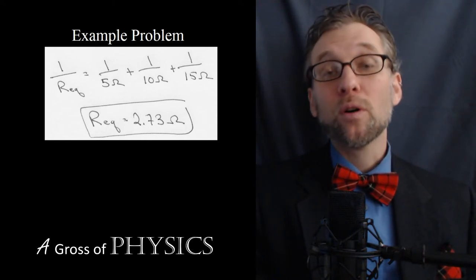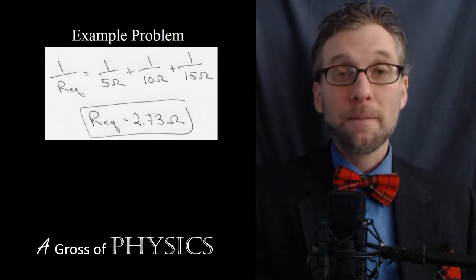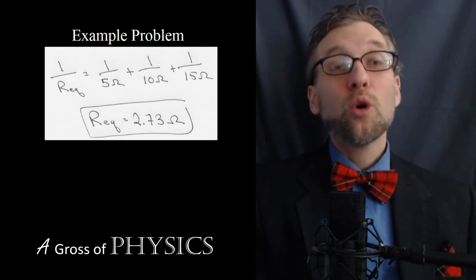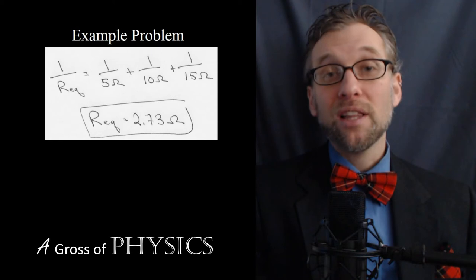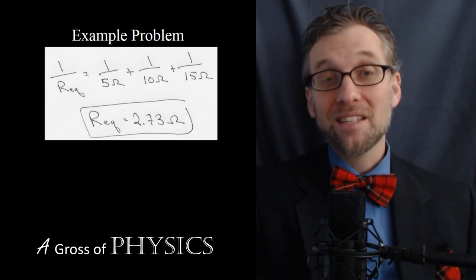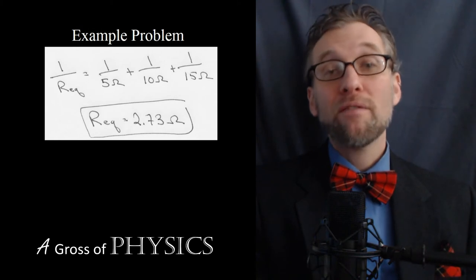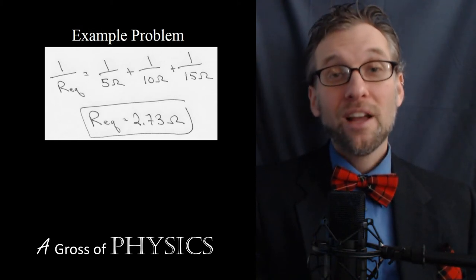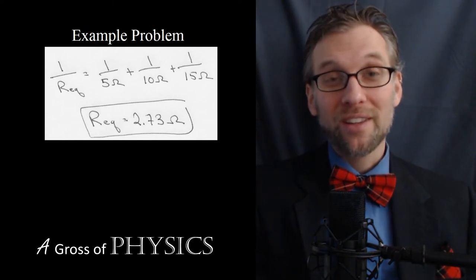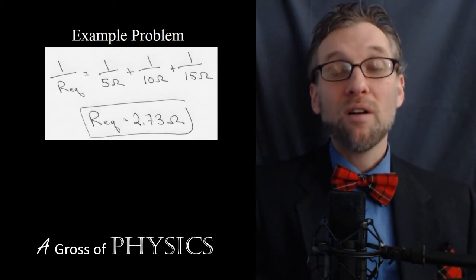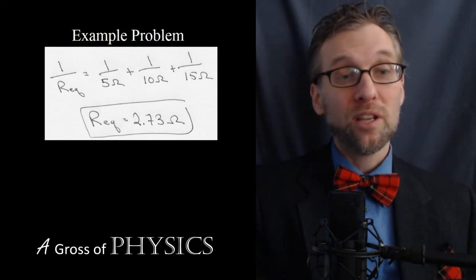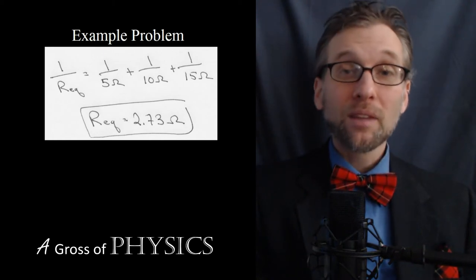Here's a way to remember whether your final answer is correct: because you're giving the electrons a choice, the equivalent resistance is always going to be less than the smallest resistor. So 2.73 ohms is less than the 5 ohm resistor — that's a good sign. If you had left it as 11/30, that's also smaller than 5, but it's less than 1, which is typically too small for equivalent resistance values.